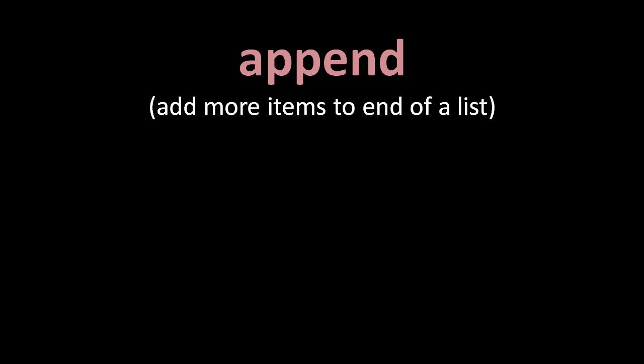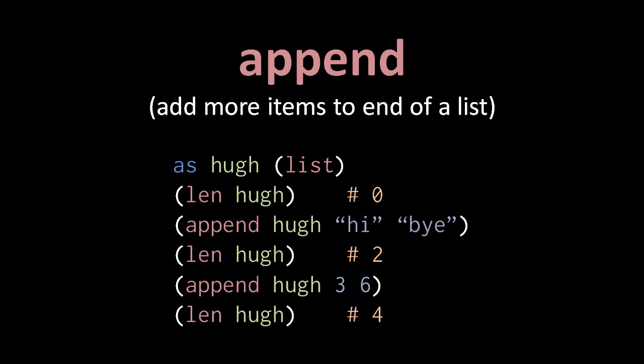The other operator that mutates lists is append. Append adds additional items to the end of the list, increasing its length. Starting with an empty list assigned to the variable hue, invoking len hue will first return 0, but if I then append two items to hue, invoking len hue will return 2. And if I then append two more items to hue, invoking len hue will return 4.